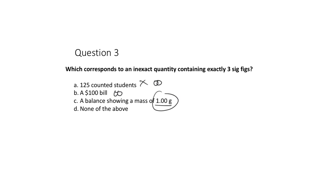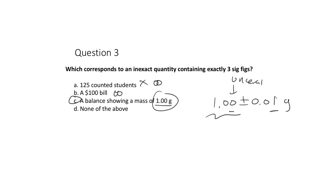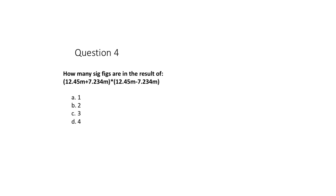A balance telling you 1.00 grams — this is the one that has three sig figs. What three sig figs means is you have 1.00 plus or minus 0.01 grams. You have some uncertainty in the last digit; all three digits including the uncertain digit count. So we have three sig figs in the 1.00 gram value.